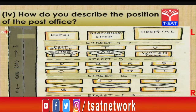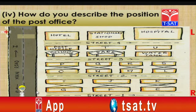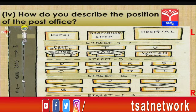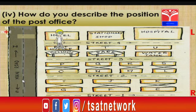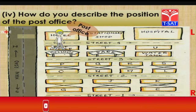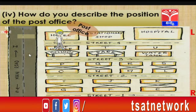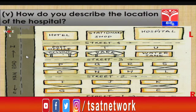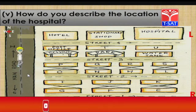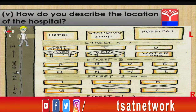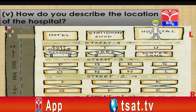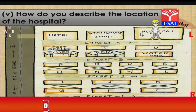How do you describe the position of the post office? The person moves north to street number 4, enters and finds the right side first object is the post office. So the address is: street number 4, right side, first object. How do you describe the location of the hospital? The person enters street number 4 eastward - the left side third object, counting 1, 2, 3, is the hospital.